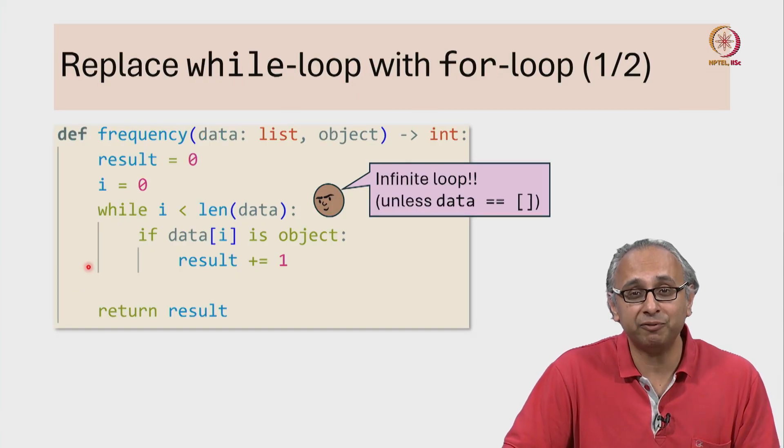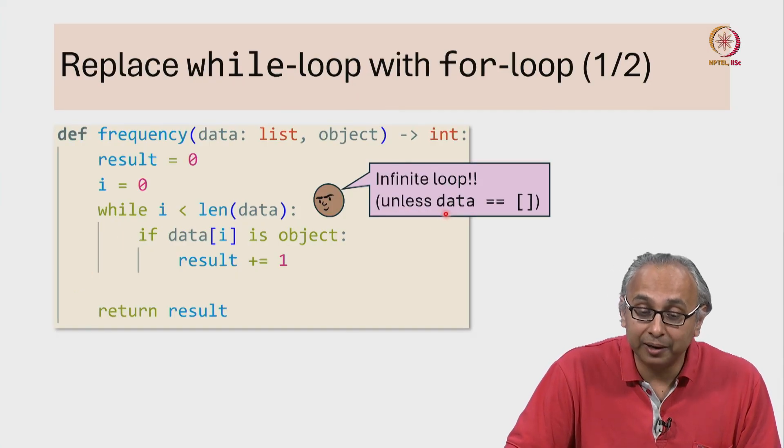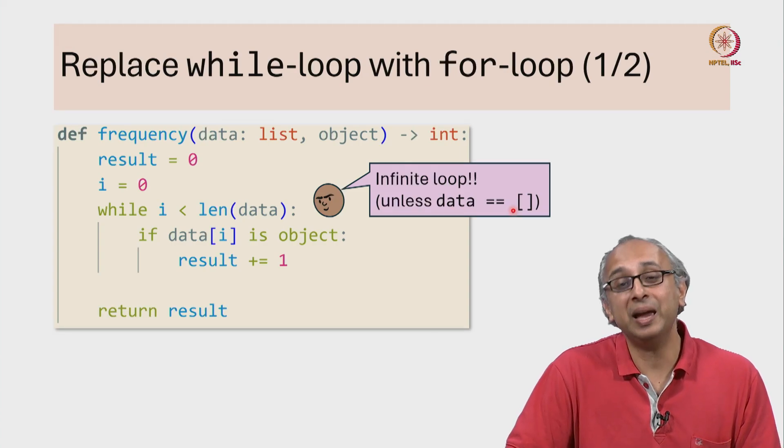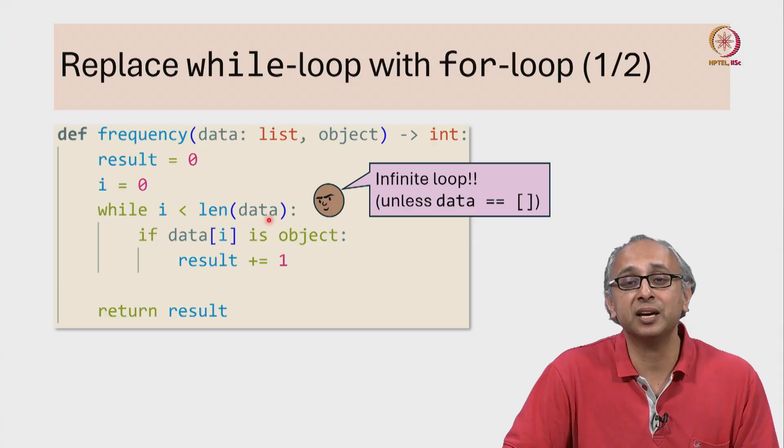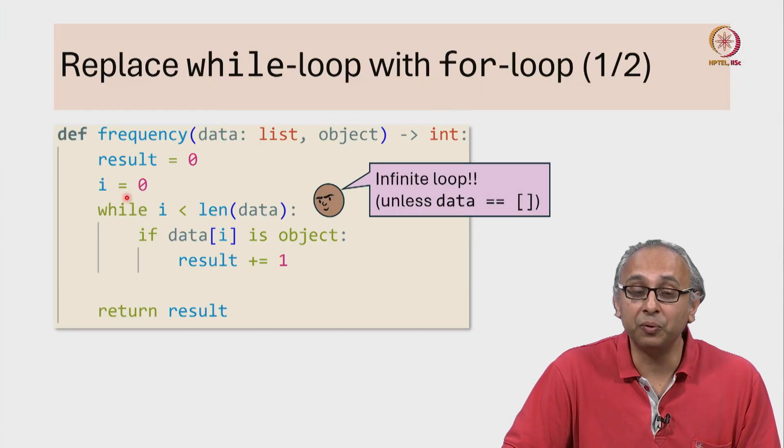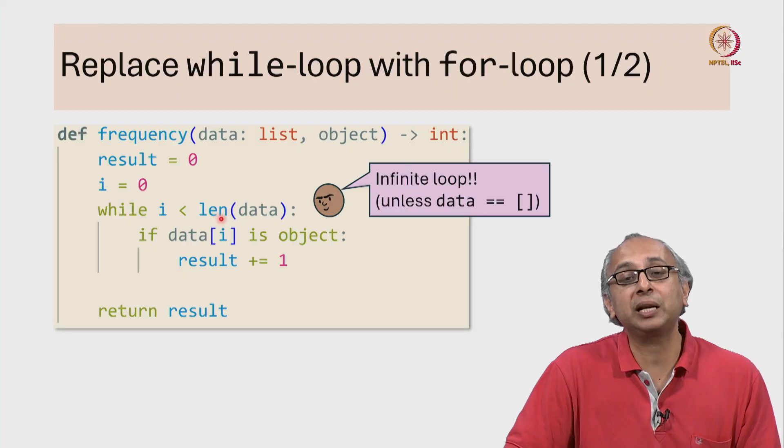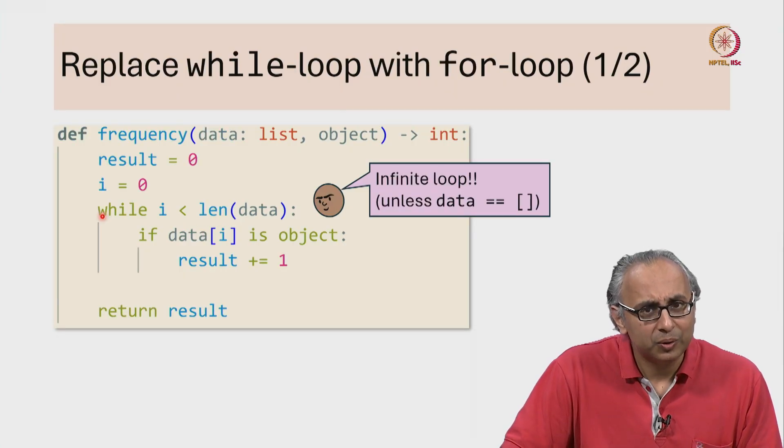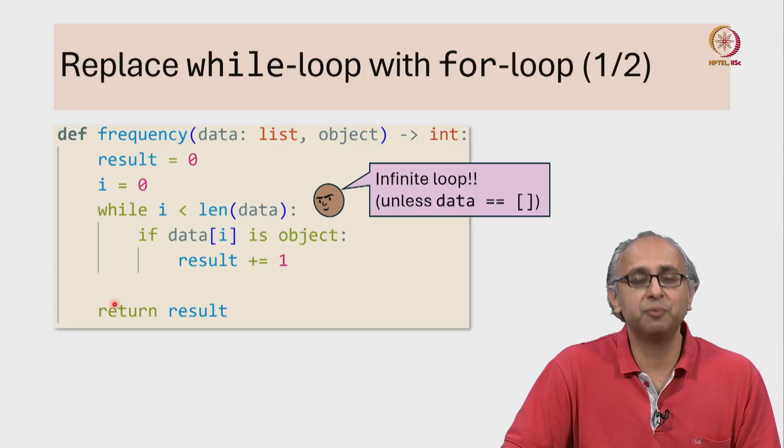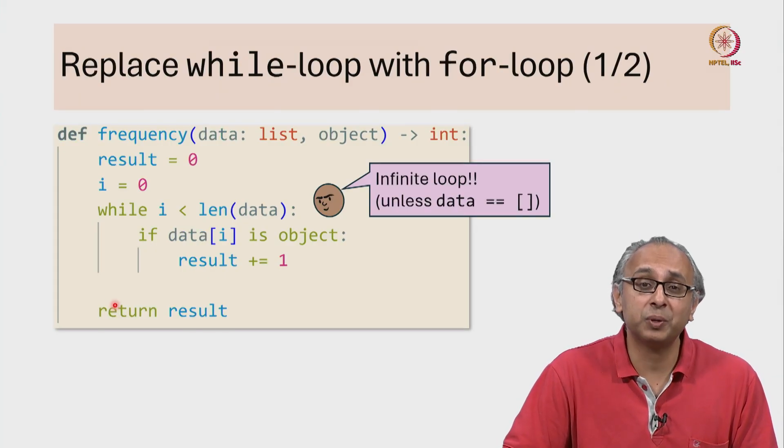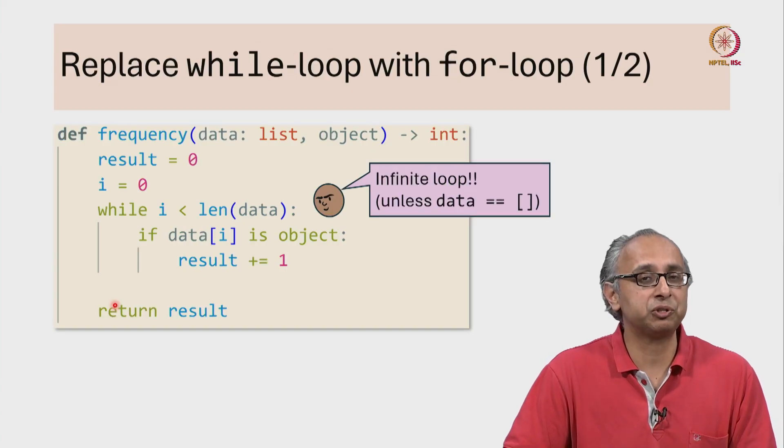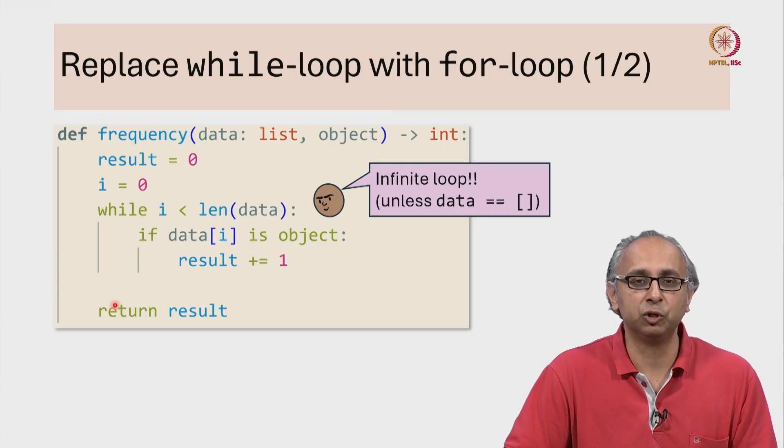Now our friend is being very precise here—unless of course data is the empty list. If data is the empty list, then length of data is 0. We initialized i to 0, and 0 is not strictly less than 0, so what would happen then? We would skip past and return result which is 0. So in that case, in the case where the list is empty, this function would actually work and it would not be an infinite loop.